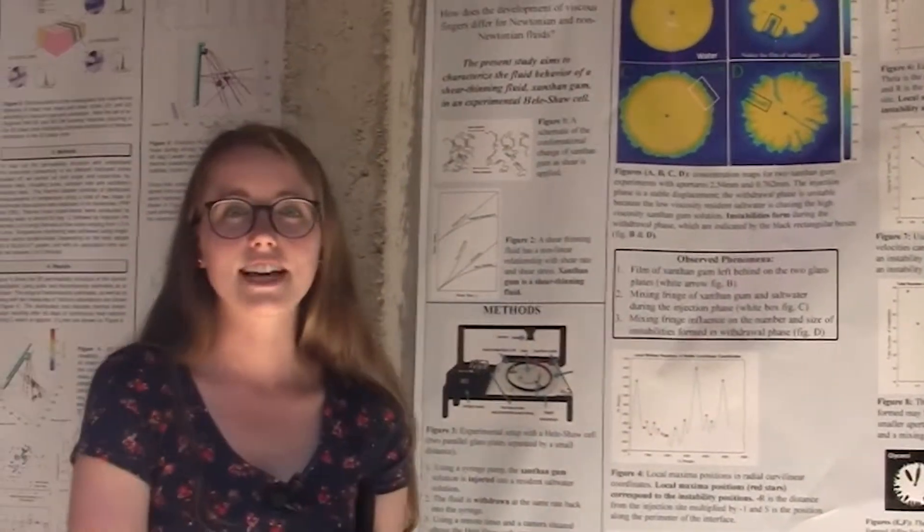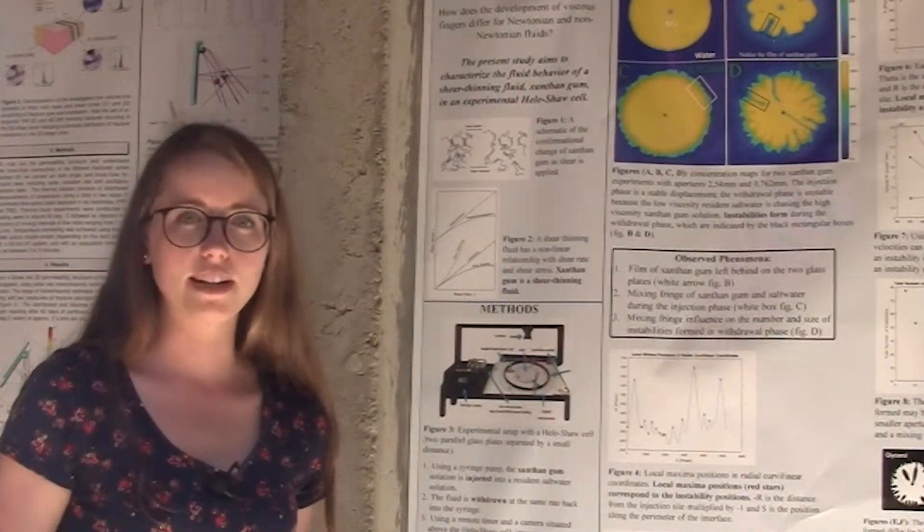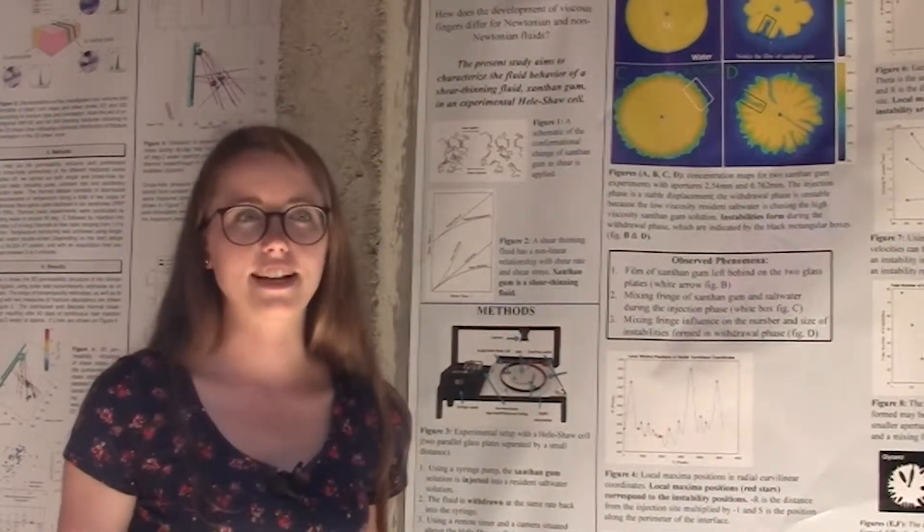The non-Newtonian fluid that I'm using is xanthan gum. It's a shear-thinning fluid, so its viscosity is going to decrease as the shear rate increases.